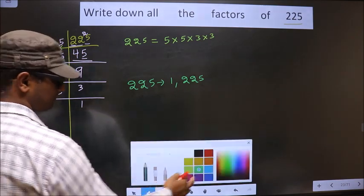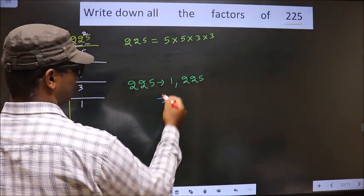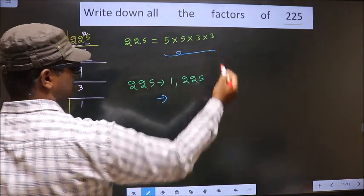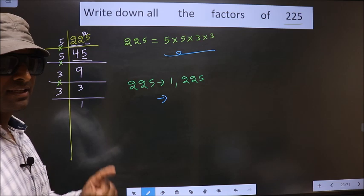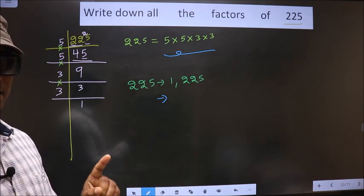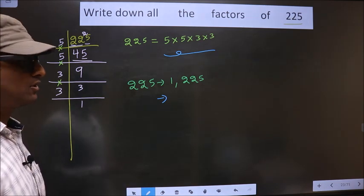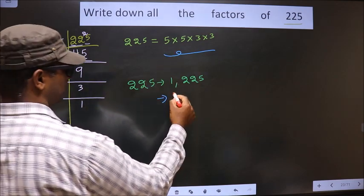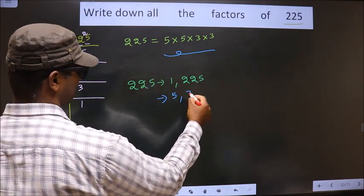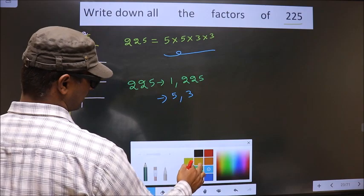Next. From these numbers, now you select 1 different number at a time. Like that, how many numbers do you get? You get 5, you get 3. That's it.